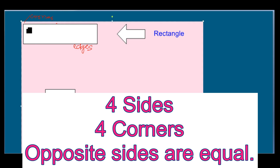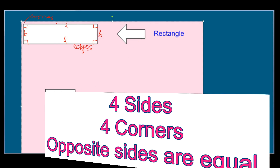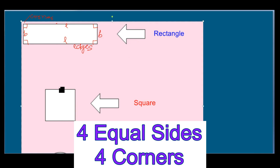The rectangle has one, two, three, four corners, and these are called angles. These angles are 90 degrees. This is the length, designated with L, and this is the width or breadth, designated with B. So this is the rectangle.